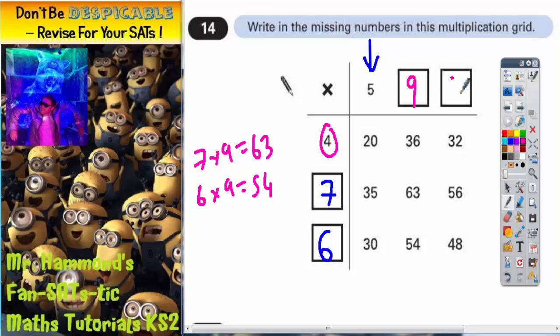times table should show you that it's 4 eights are 32. So that fits in, 4 eights are 32, 7 eights are 56, 6 eights are 48. So that's all of the numbers filled in.